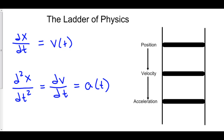You can think of the physics functions position, velocity, acceleration, and jerk like a ladder. The very top of it is position. One step down is velocity, and one step down from that is acceleration. If you take the derivative of position, you get velocity. If you take the second derivative of position, you get the derivative of velocity, which is acceleration. So to go from position to acceleration, all you have to do is take one derivative to get to velocity, take the derivative of that, and you get to acceleration.